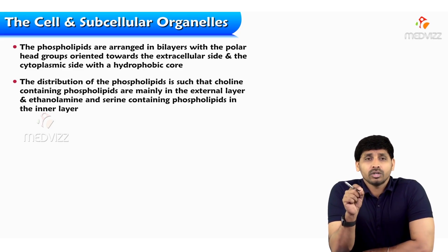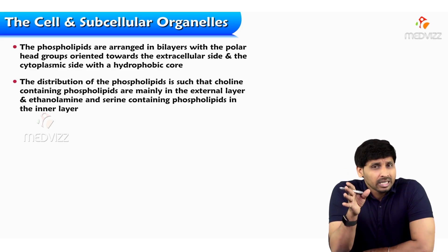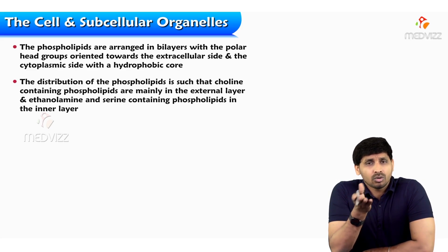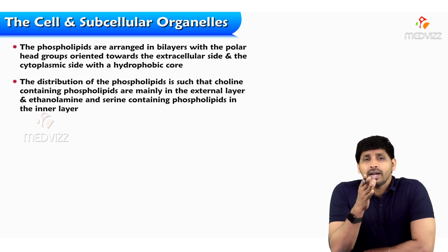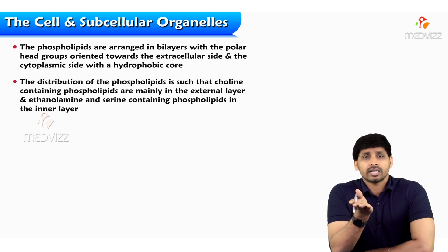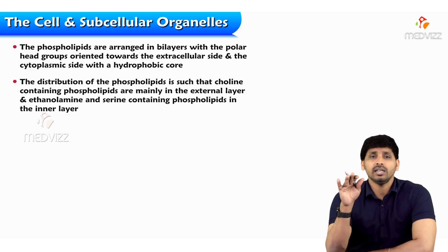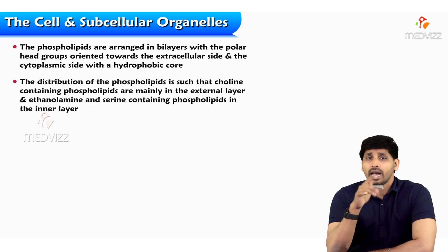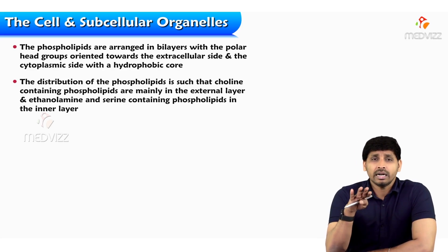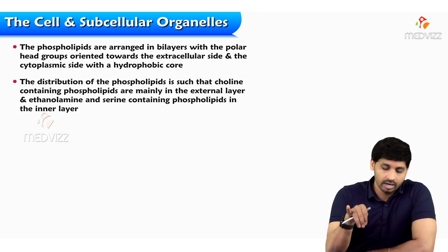The main contributors of the fluid mosaic model are phospholipids. Phospholipids are arranged in bilayers with polar head groups — hydrophilic and water-soluble — facing towards the outside on both the extracellular side and cytoplasmic side, while the hydrophobic core tails are packed inside. The distribution of phospholipids is such that choline-containing phospholipids are mainly in the external layer, and ethanolamine- and serine-containing phospholipids are in the inner layer.